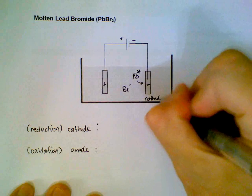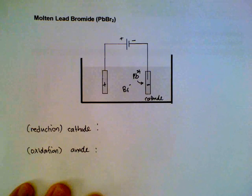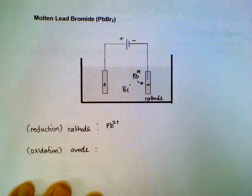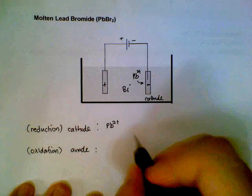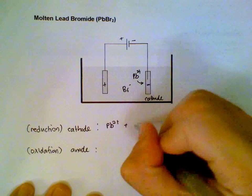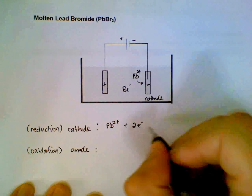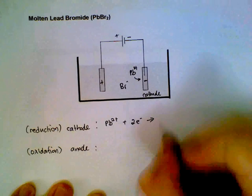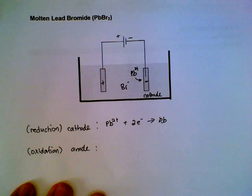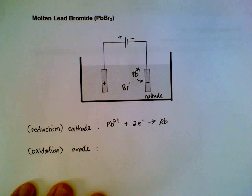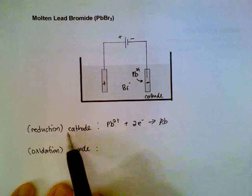We write the half equations for the cathode first. Lead 2+ will require two moles of electrons to totally discharge, forming lead element. Again, reduction takes place at the cathode.